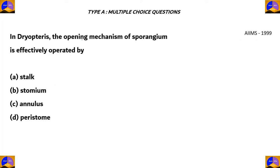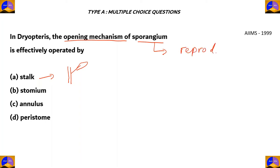In Dryopteris, the opening mechanism of sporangium is effectively operated by: A. stalk, B. stomium, C. annulus, D. peristome. Let's look at each option. A stalk is a part of the plant which holds the stem and leaves upright — it has no role in the opening mechanism of sporangium. Sporangium refers to reproductive parts of Dryopteris. So option A is incorrect.